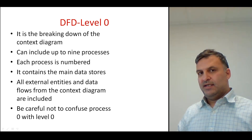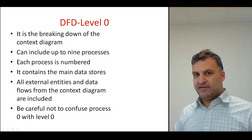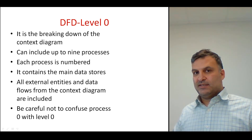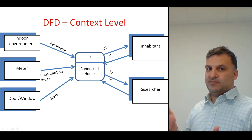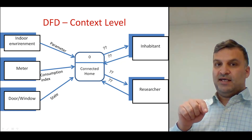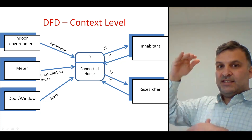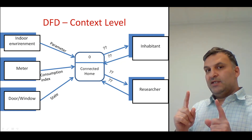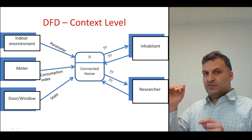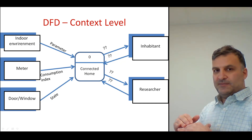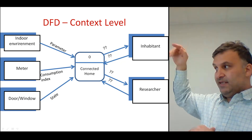The DFD should contain the main data stores, all external entities, and data flows from the context diagram. Be careful not to confuse process zero with level zero. In level zero, processes start from one, two, three, four — so we don't have number zero. Process number zero is the entire system, seen at the context level, the highest level. Level zero is the second level, while process zero is the highest process at the context level.